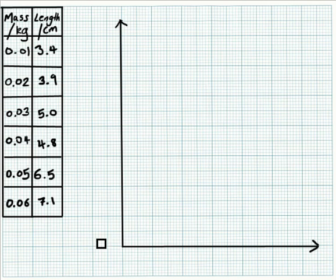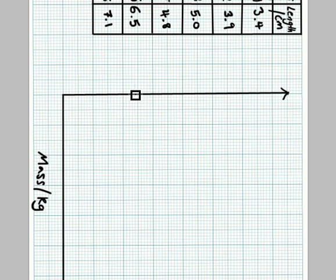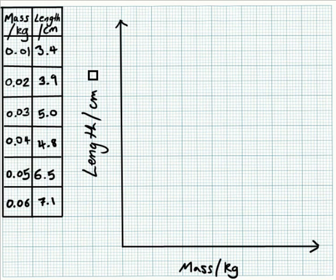And I don't need to actually label them x and y, but I do need, very importantly, to label them with the same things that are on my table. Otherwise I will lose marks in the ISA or in an exam. And the units need to be there as well. I'm just going to rotate this paper so that I can write on here. So this is going to be the length in centimeters. It's quite a good idea to do that straight away. Then you can't forget to do it later.